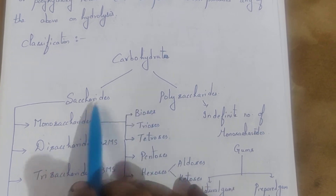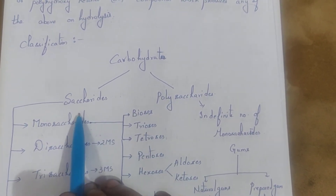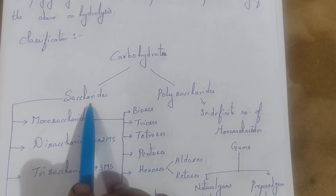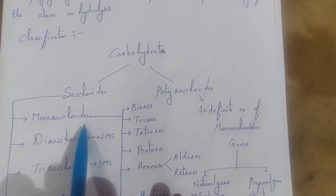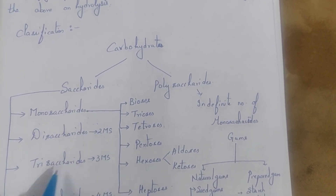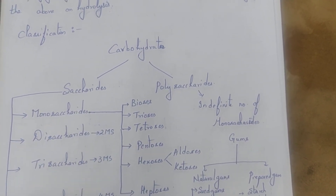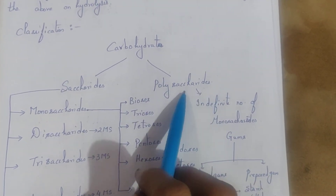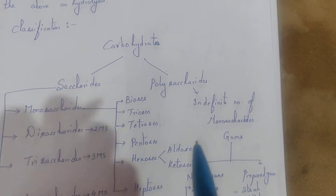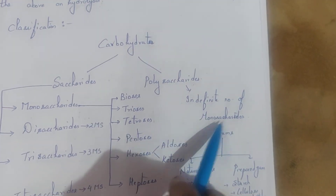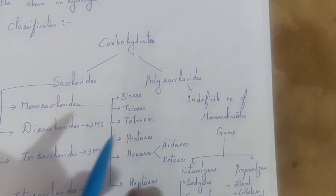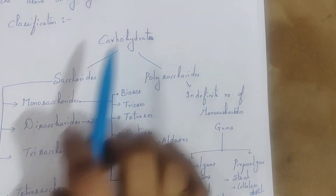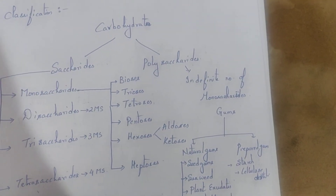Carbohydrates are divided into two types: saccharides and polysaccharides. Saccharides are again divided into monosaccharides, disaccharides, trisaccharides, and tetrasaccharides. Polysaccharides contain an indefinite number of monosaccharides. First, we concentrate on saccharides.